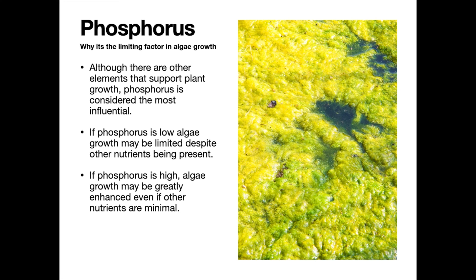When we look at the relationship between phosphorus and algae, it's very important to understand that although there are other nutrients like nitrogen, phosphorus in my mind is the most influential. Some say it is the limiting factor for algae growth, meaning that if phosphorus is low, algae growth may be limited despite other nutrients being present and potentially higher.